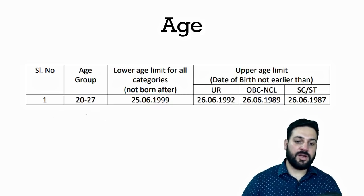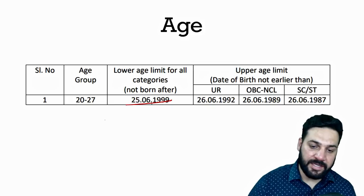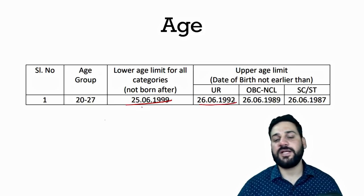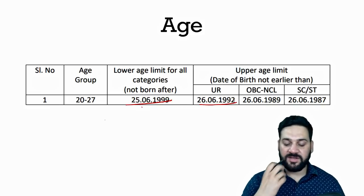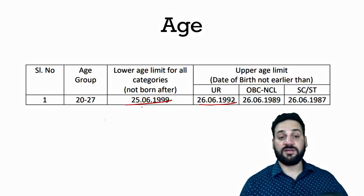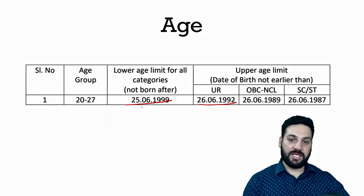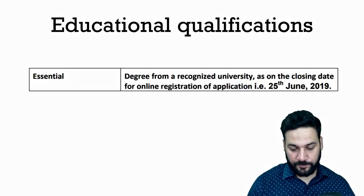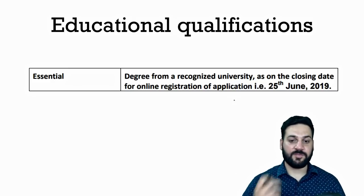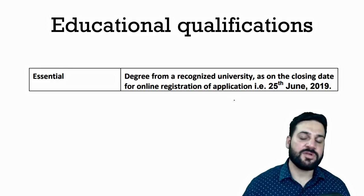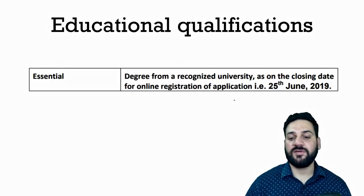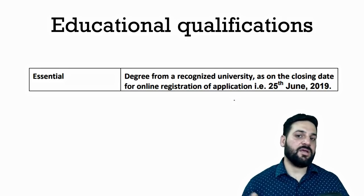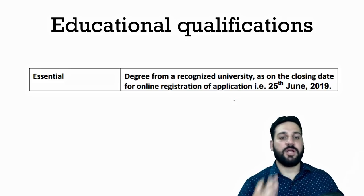The age requirement is 20 to 27 years. If you were born after 25th June 1999, you are not eligible, and if you were born before 26th June 1992, you are also not eligible. There is relaxation for reserved category students in age, cutoff, and exam fee. The qualification required is a graduation degree from a recognized university, and you must have completed it before 25th June.